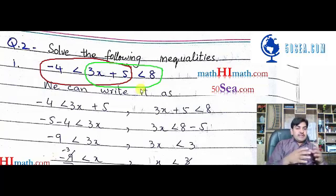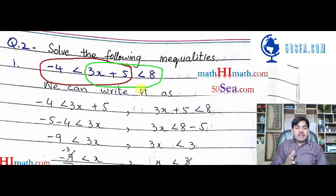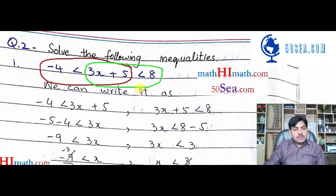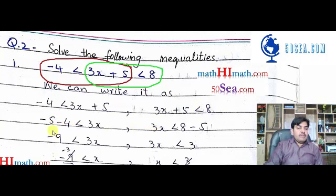Basically, 3x + 5 is sandwiched in the center. Because it's in the center, we make two portions. When we make two portions, we get: -4 < 3x + 5 and 3x + 5 < 8. Now in both places we need to find the value of x.